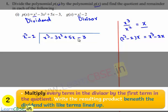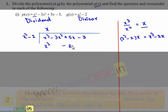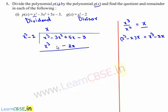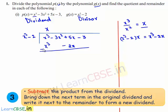So x can be written in the place of the quotient and the multiplication x cube minus 2x can be written here. On subtracting, we will be getting minus here and plus here. So x cube and minus x cube can be cancelled. We will be getting minus 3x square plus 5x, and plus 2x is plus 7x, and here it is minus 3. So the new dividend is minus 3x square plus 7x minus 3.